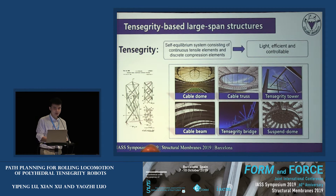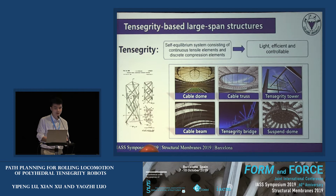A tensegrity structure is a self-equilibrium system consisting of continuous tensile elements and discrete compression elements. It is a good candidate for large span structures because of its lightweight efficiency and controllability. Typical tensegrity-based large span structures include cable dome, cable truss, tensegrity tower, cable beam, tensegrity bridge, and suspended dome.